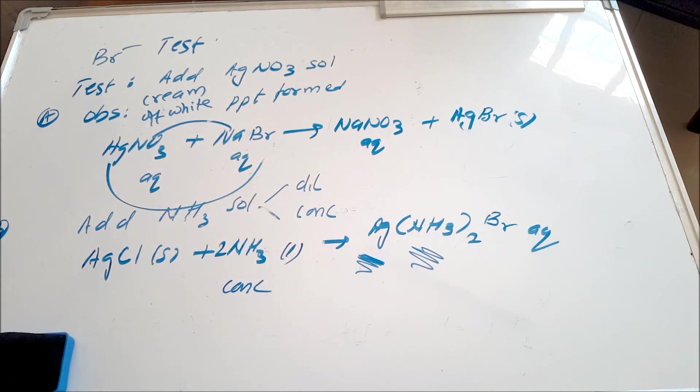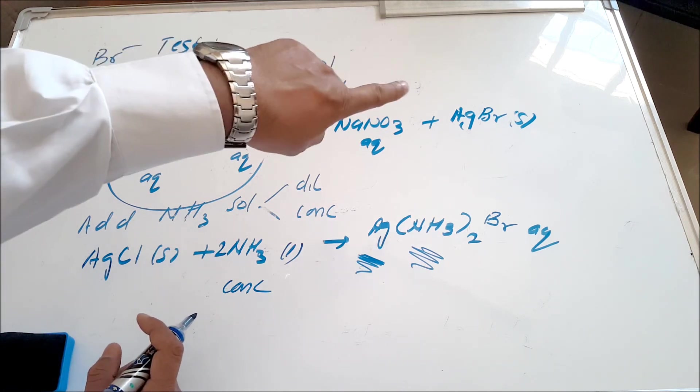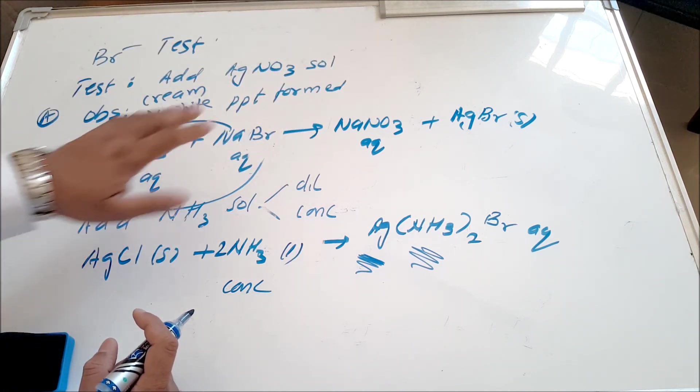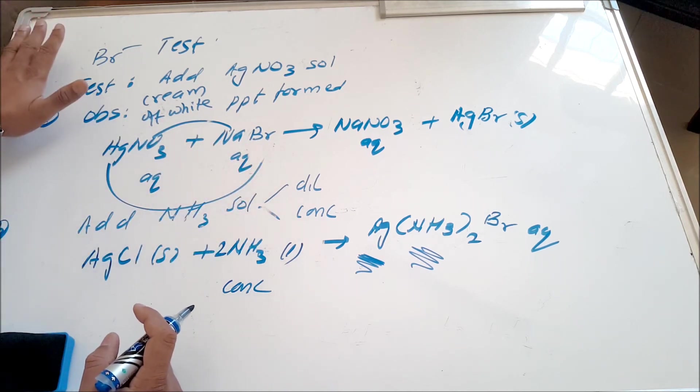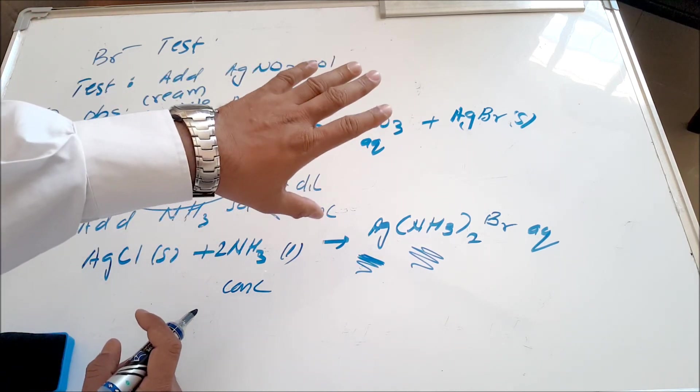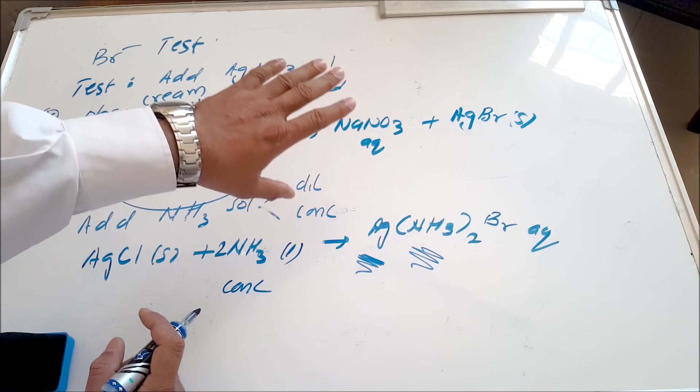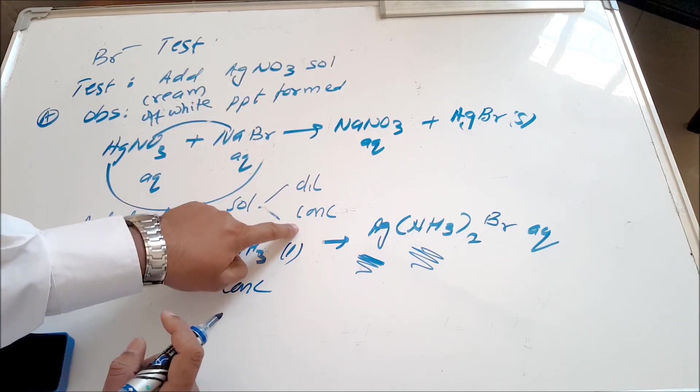See, that's how easily you can learn the whole thing. It's very comparable to chloride. The only difference now is in the chloride test, the precipitate that I got there was soluble in dilute ammonia also and concentrated also, but in the case of bromide, the cream precipitate which I'll get or off-white precipitate is only soluble in concentrated ammonia. So that's the difference.